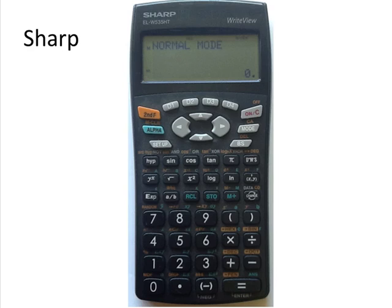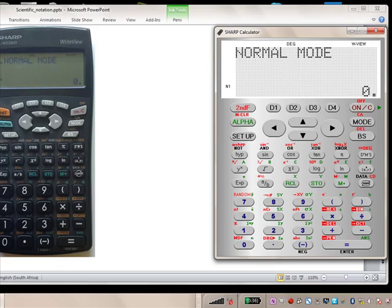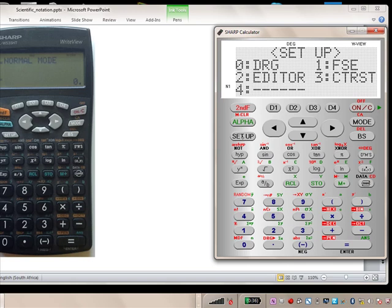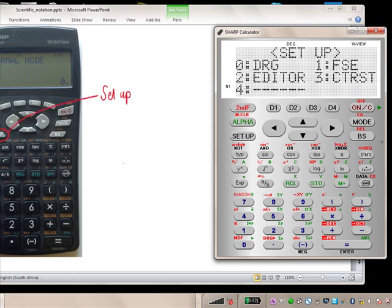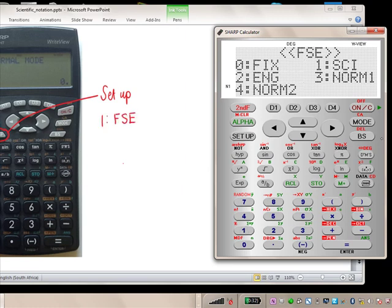Many Sharp calculators work like this. To use scientific notation, you press Setup. Some options come up on the screen, and you can see the first option is FSE. So you press a 1 to select that first option, FSE.